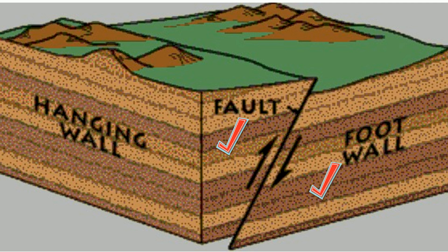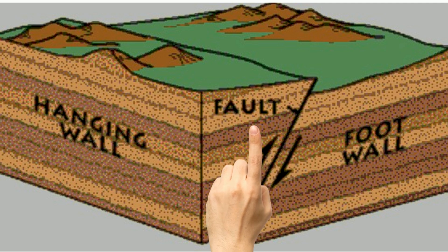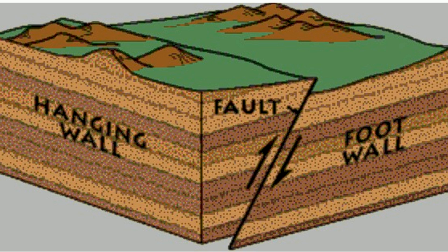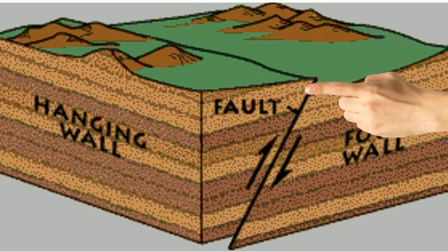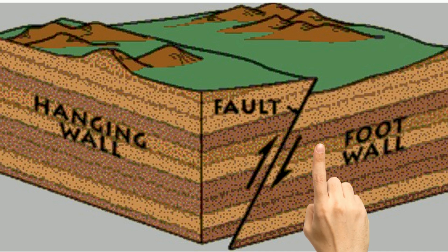Two simple ways to identify the foot and hanging wall: place your finger on the fault surface and move it up — it will automatically be located on the hanging wall. The hanging wall will have an angle less than 90 degrees at the top, and the foot wall will have an angle greater than 90 degrees at the top.